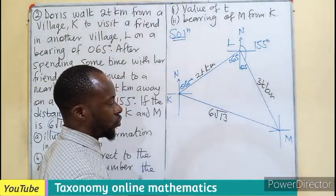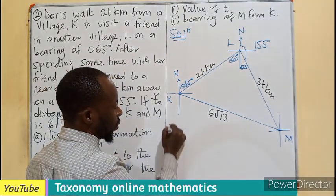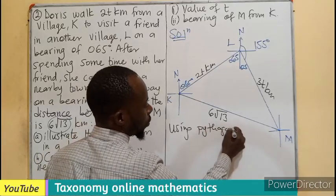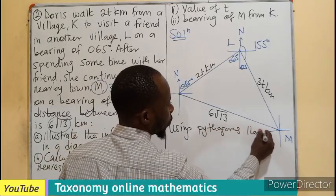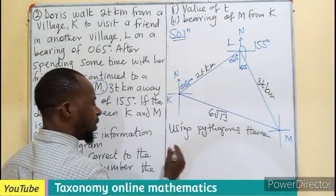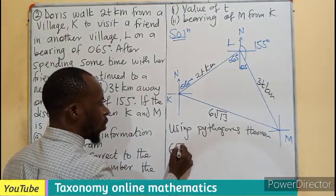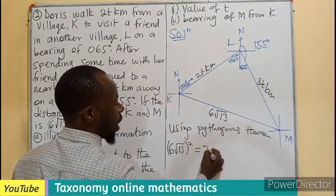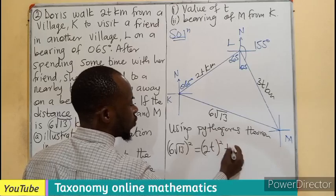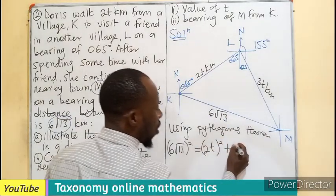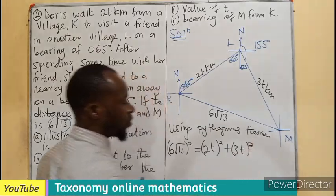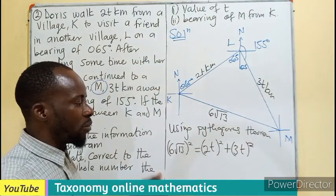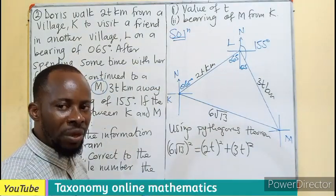So we can say that the longer side is going to be 6 root 13, all squared, equals to the sum of the two shorter sides. So we are doing that. We are putting these two terms in a bracket before squaring, because the T is different from the 2. 2 is the coefficient.